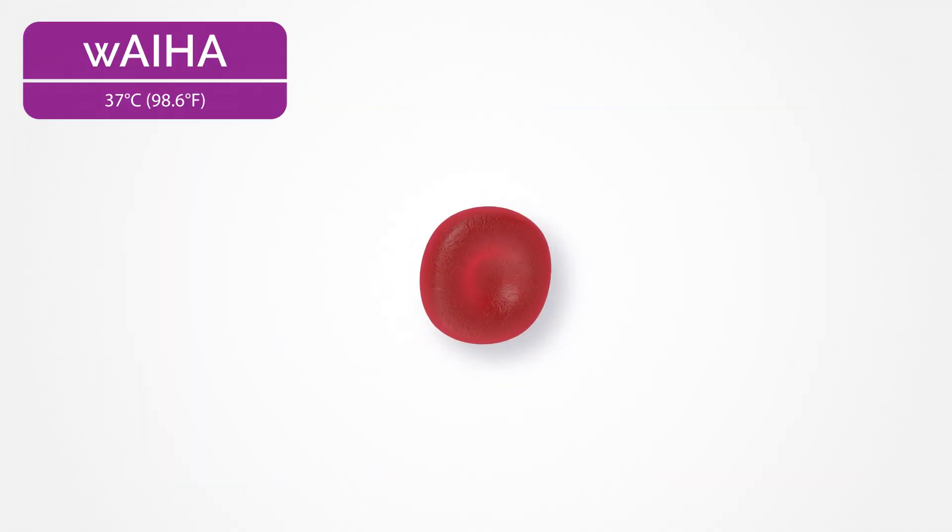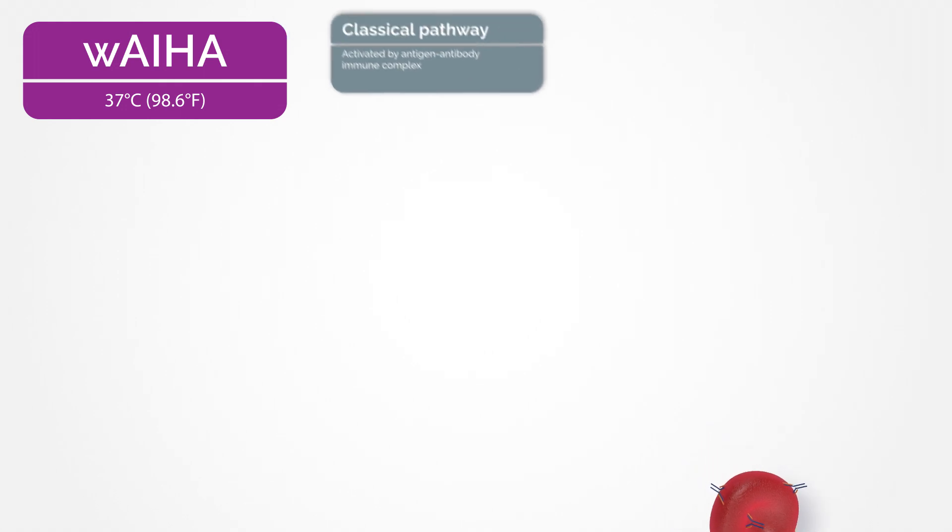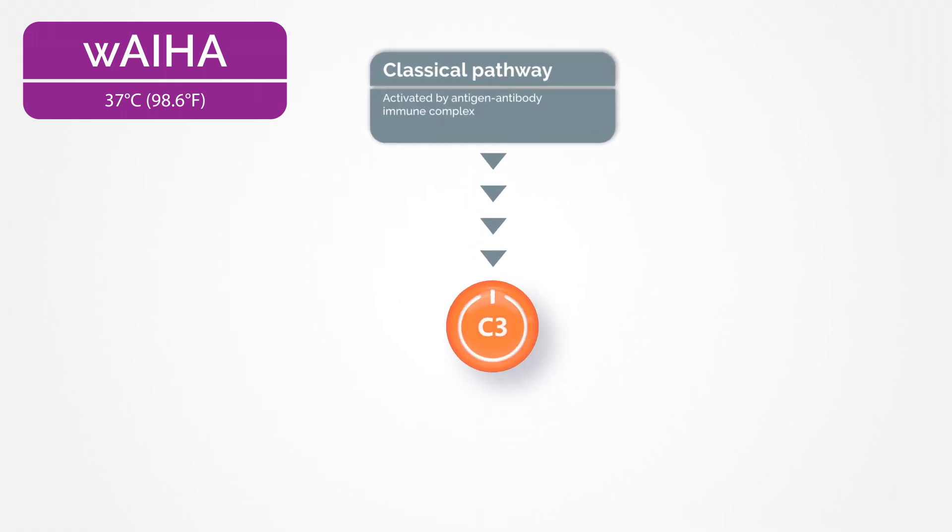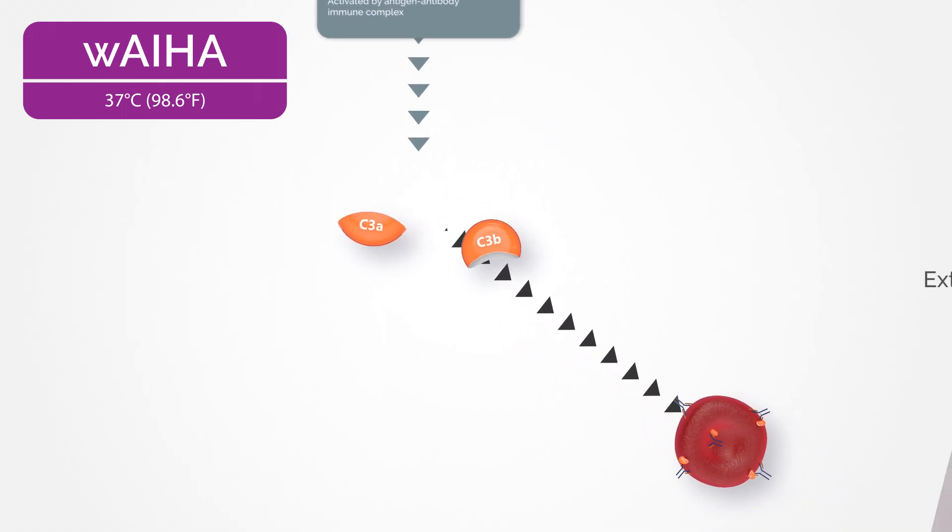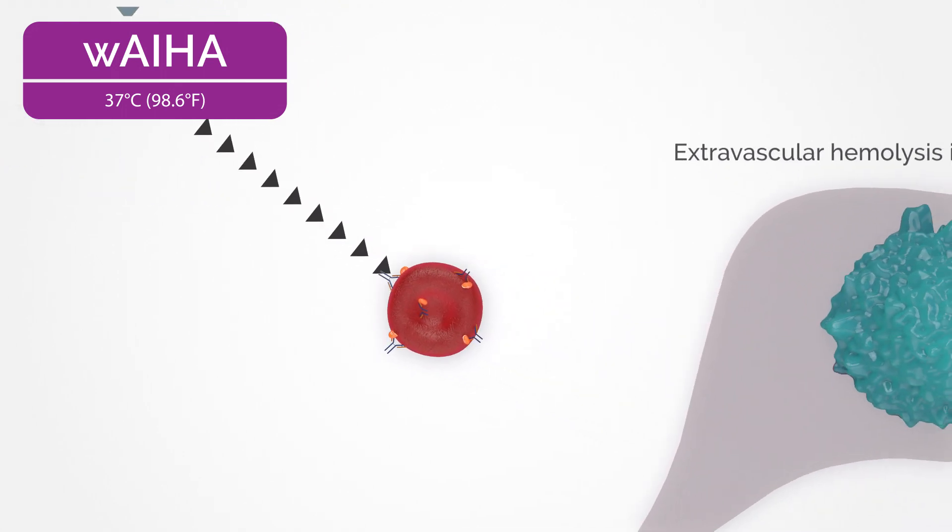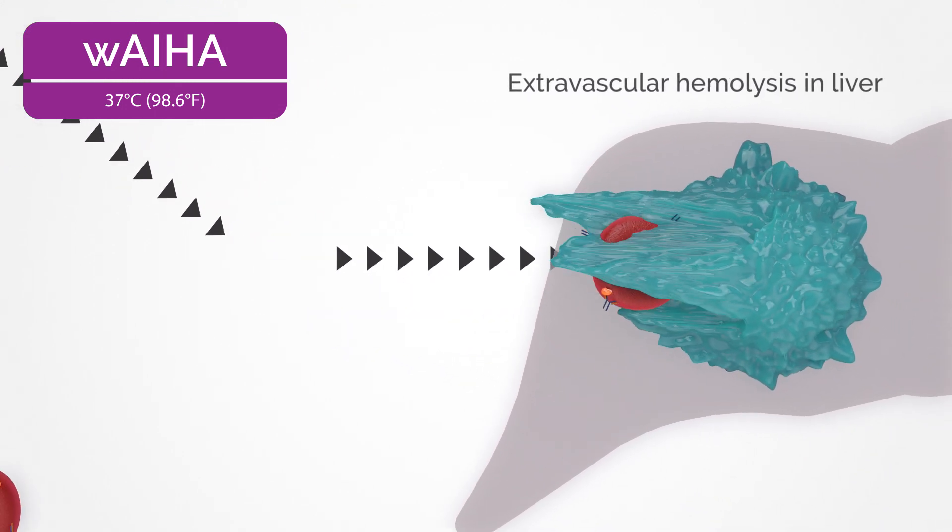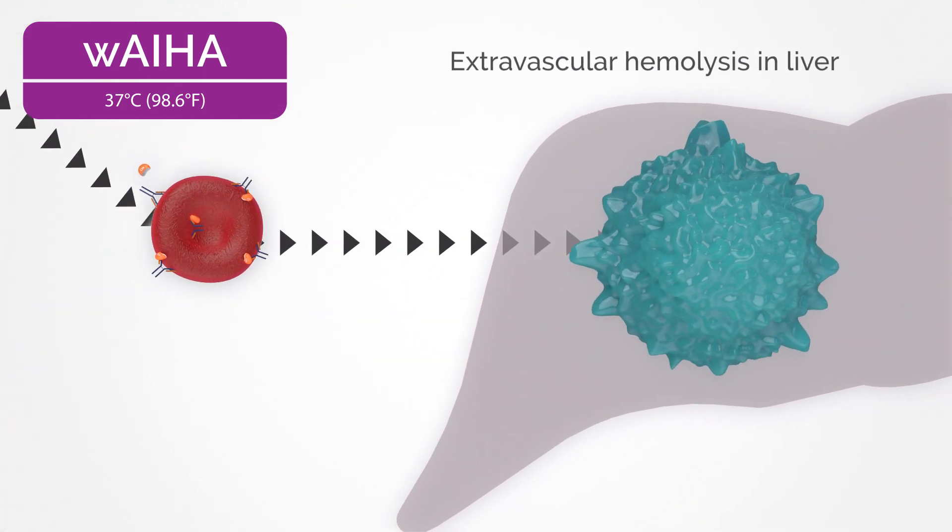In warm AIHA, IgG antibodies improperly bind to self-proteins on the surface of red blood cells, activating the classical complement pathway, which causes C3B to attach to the cell surface, resulting in extravascular hemolysis in the liver and spleen.